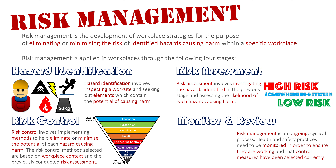What we're doing at this stage is asking: are the control measures we've put in place effective? We might do this annually, monthly, or as needed, to ensure the workplace stays safe, because it is an ever-changing environment full of elements that have the potential to cause harm. Hopefully you now have a better understanding of the risk management process under those four key areas: hazard identification, risk assessment, risk control, and monitoring and review.